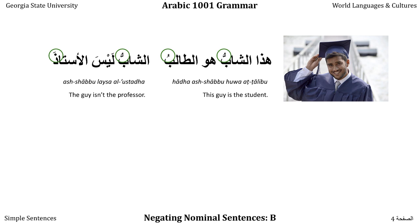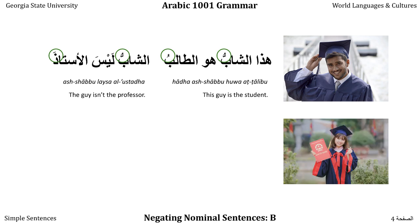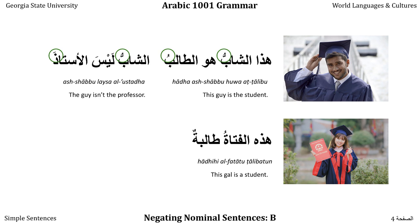In everyday conversation this makes little difference. Looking at a young woman, I can say 'Hatha Hilfatatu talibatun' — this gal is a student — where both the Mubtada 'Hatha Hilfatat' and the Chabar 'talibah' are by default in the Marfu case. I mark al-Fatat with a single Dhamma because it's definite, and Talibah with Tanwina al-Dhamm because it's indefinite.